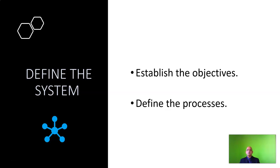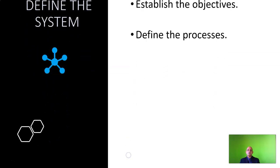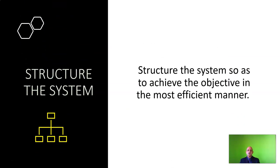This brings us to the step-by-step process of laboratory management. The first step involves defining the system in which you establish objectives and define processes. The next step involves structuring the system — defining the roles and responsibilities of the various personnel and the standard operating procedures which they will adopt in order to ensure compliance.